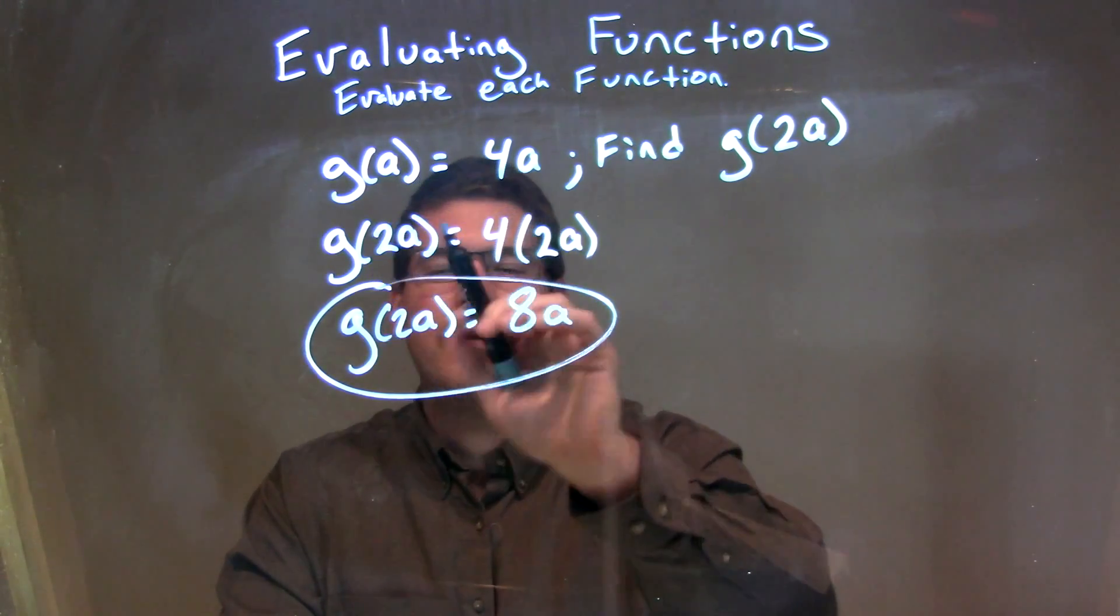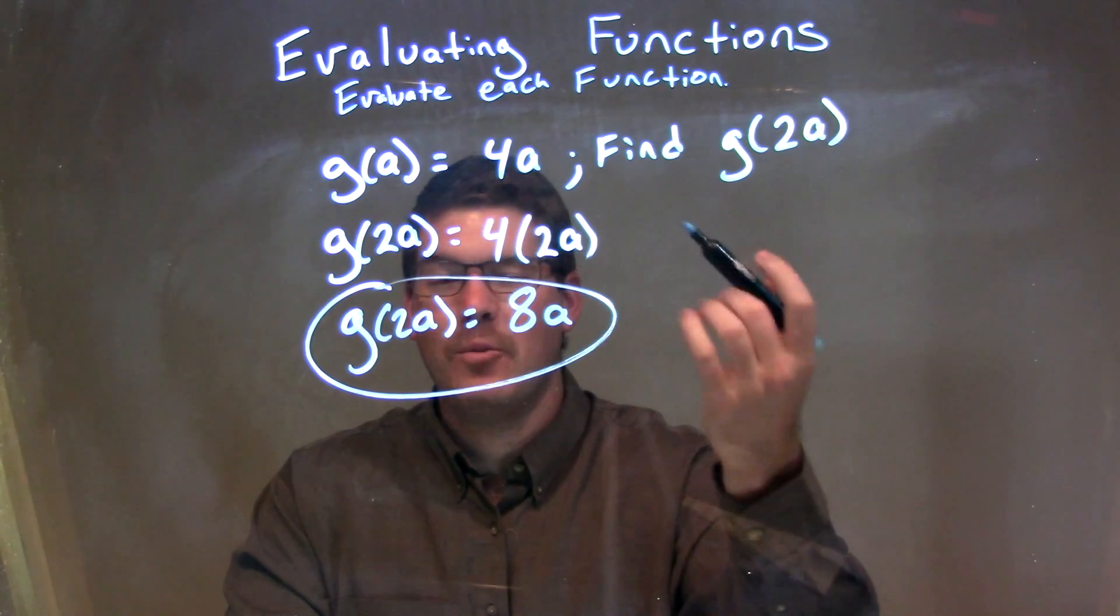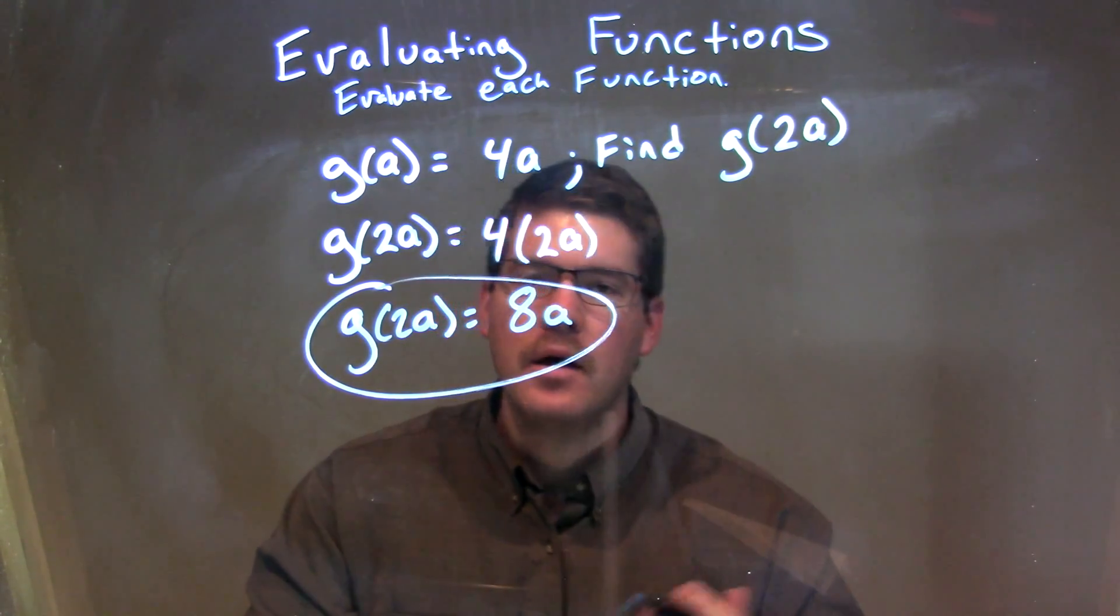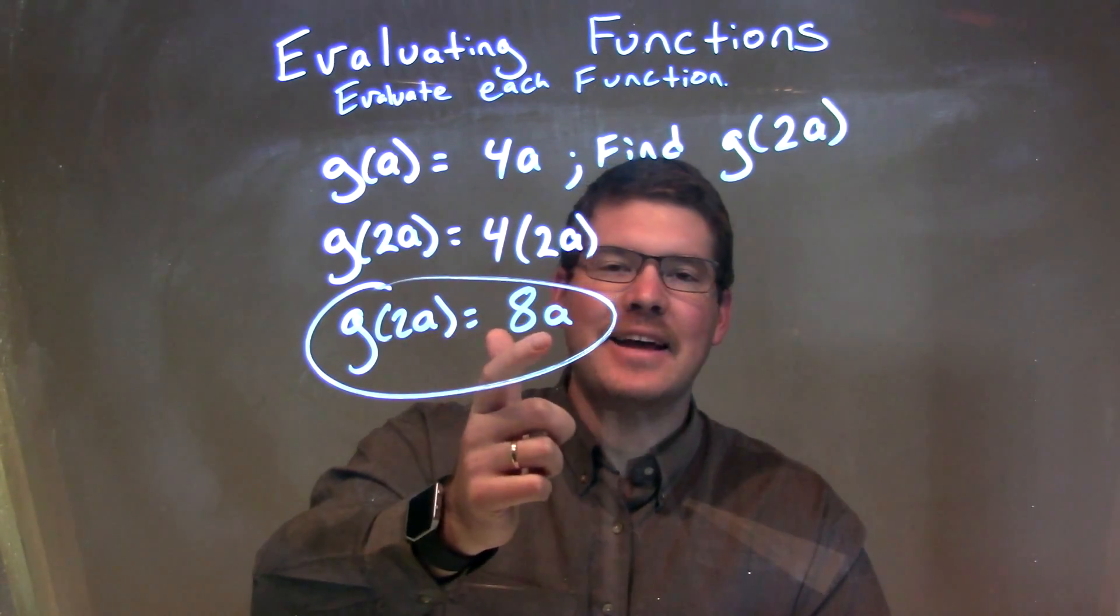So, g of 2a now is equal to 4 times, plug it in, 2a. Let's simplify that, 4 times 2a is 8a. So, again, our final answer here is g of 2a is equal to 8a.